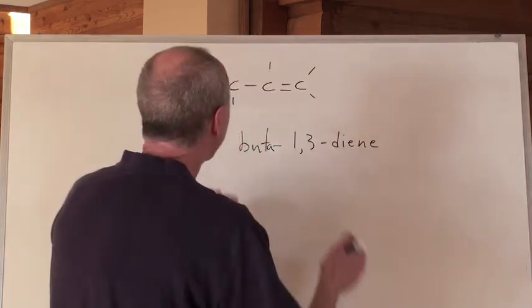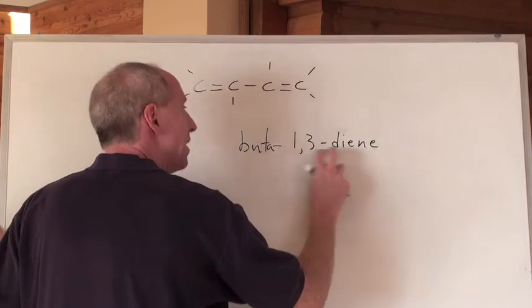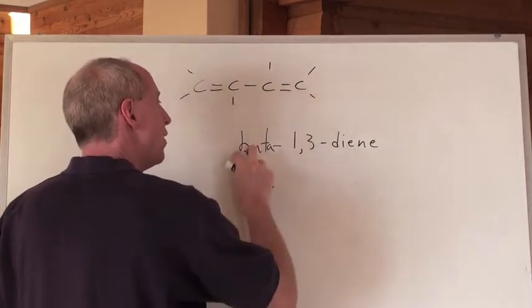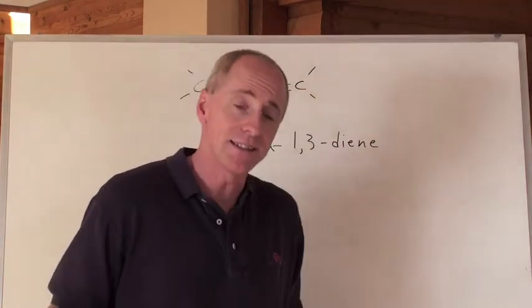Okay. So, there's two eens, you see, and there's diene. Where are they located? At the one and the three, on the butte. It makes sense.